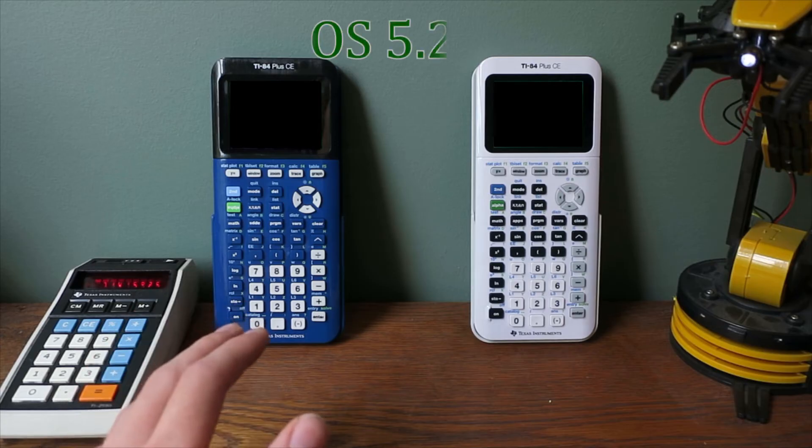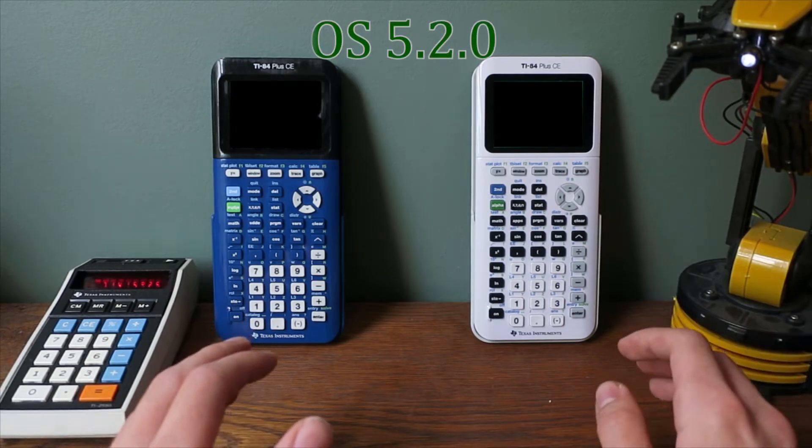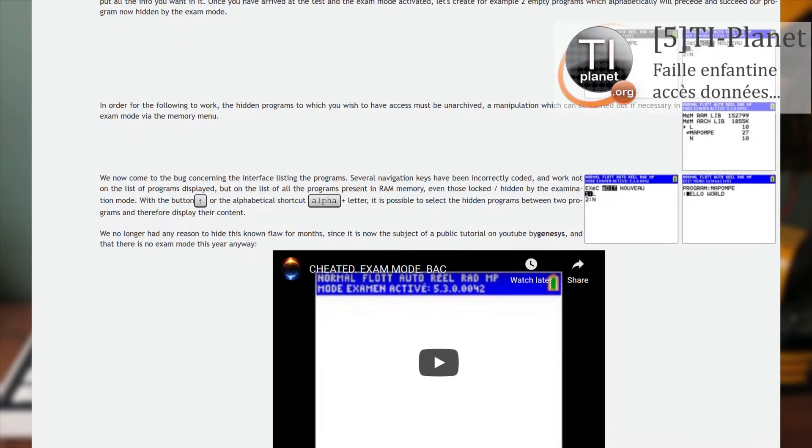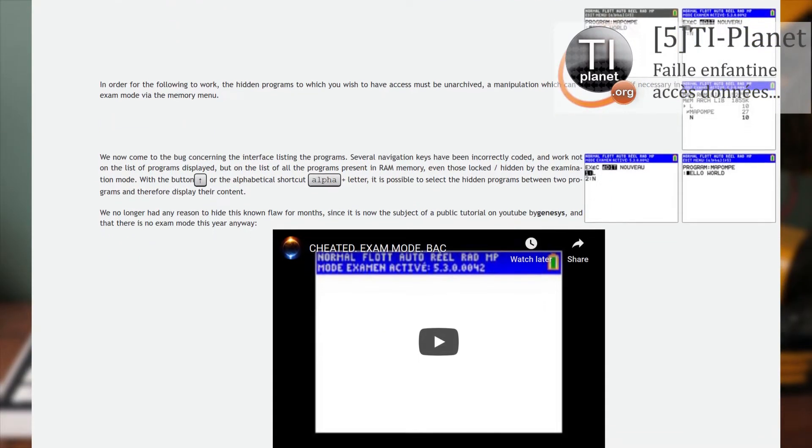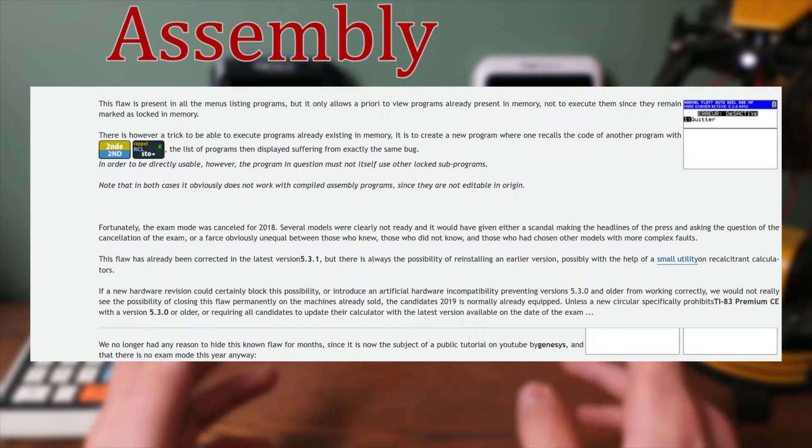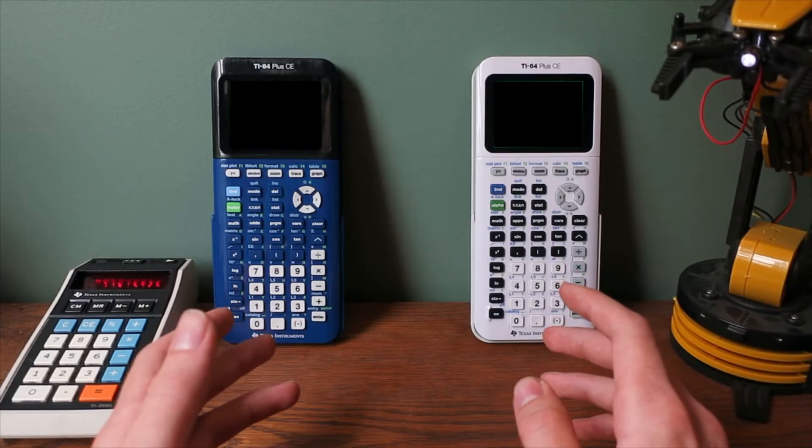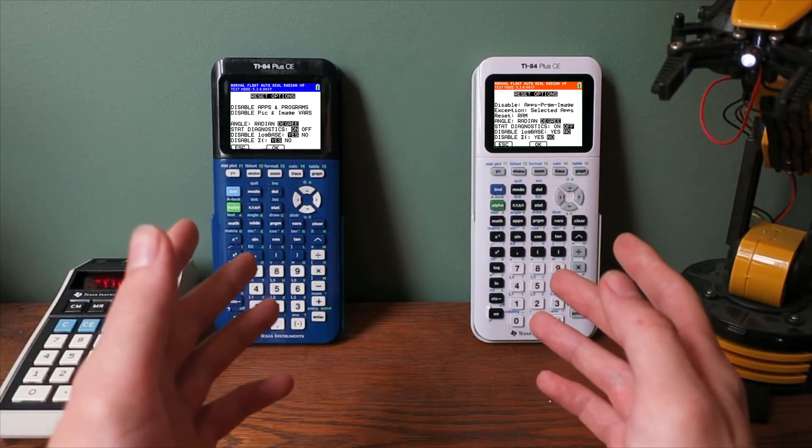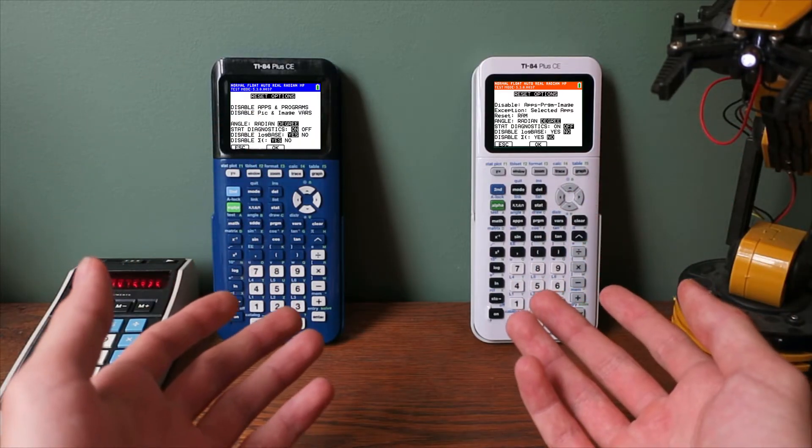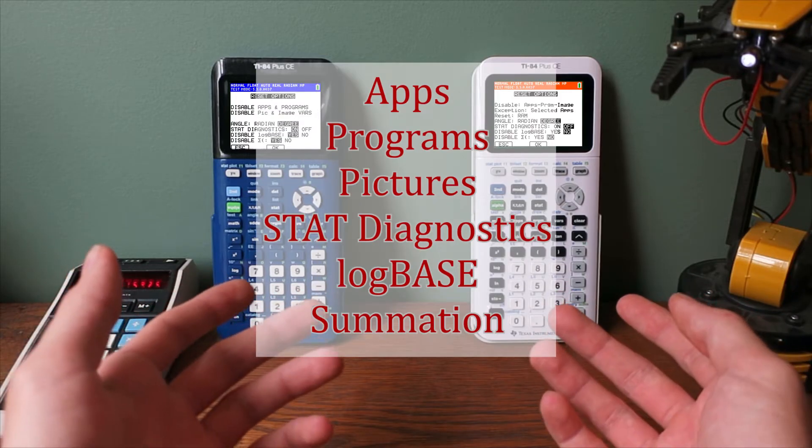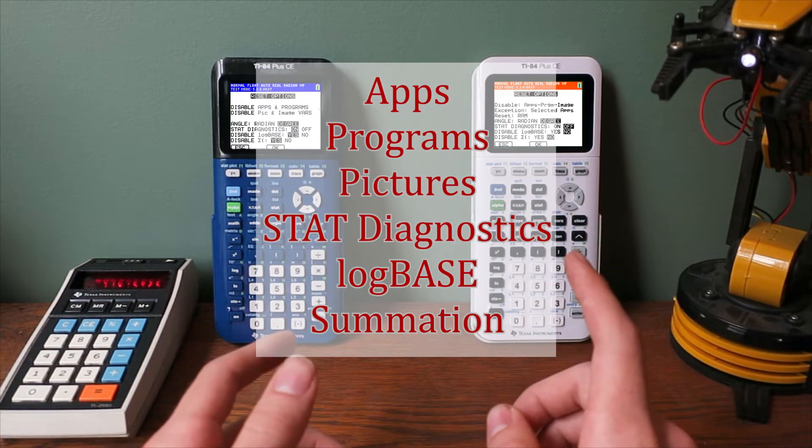When OS 5.2.0 was released in 2017, it contained a bug in exam mode that allowed a user to run programs they shouldn't have been able to run and from there it potentially used assembly code or ASM to disable exam mode. If you're unfamiliar with exam mode, essentially it's a huge reason why calculators are still around today. In short, it allows teachers and exam proctors to disable features on calculators they don't want students to have access to during exams.